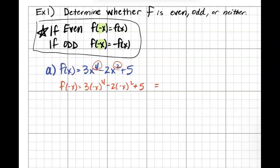The negative to the 4th is going to become positive, so it's going to be positive 3x^4. Here the negative squared is going to become positive x^2, so it'll be negative 2x^2, and then 5 is not changing.